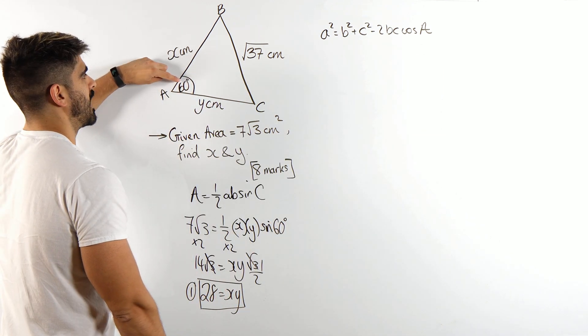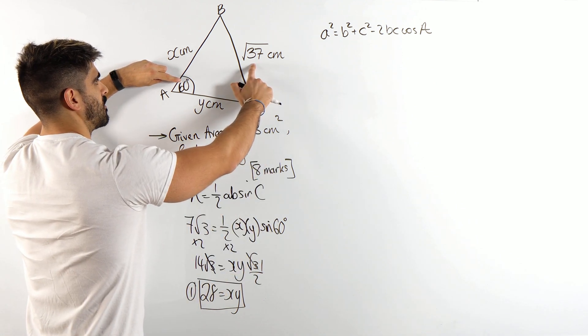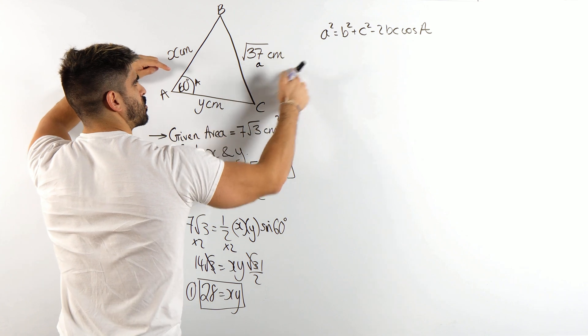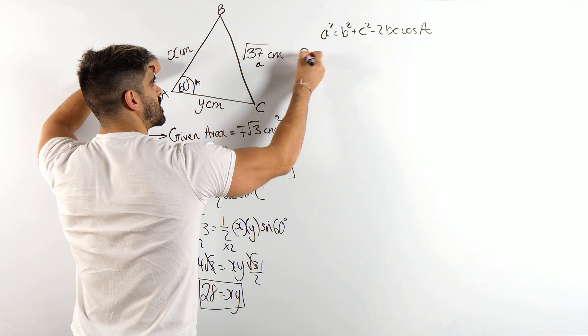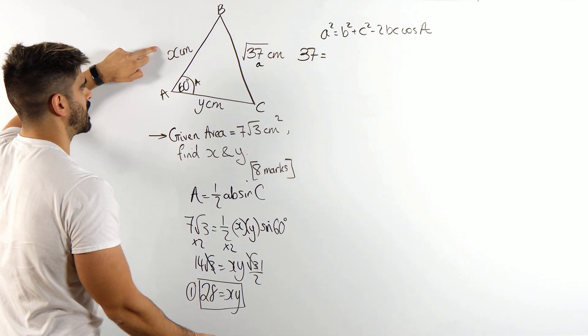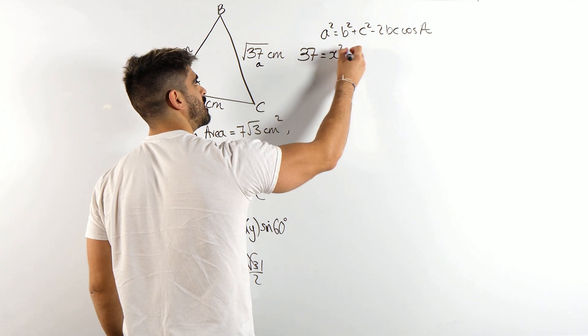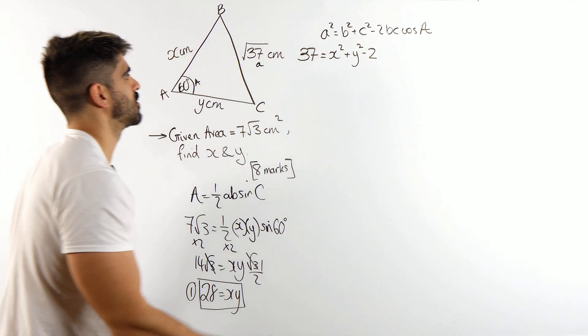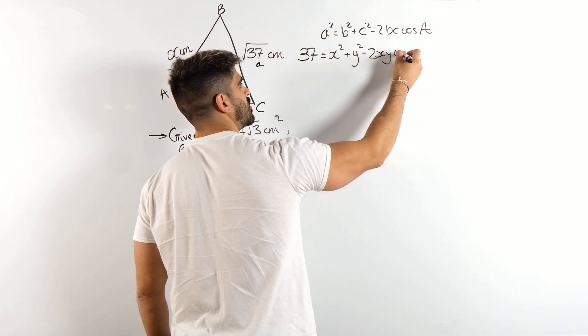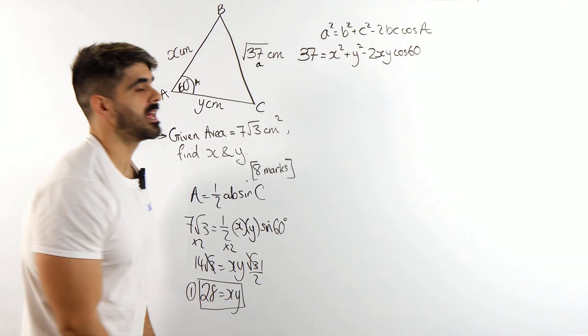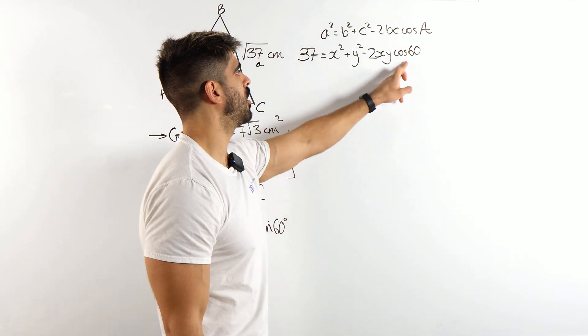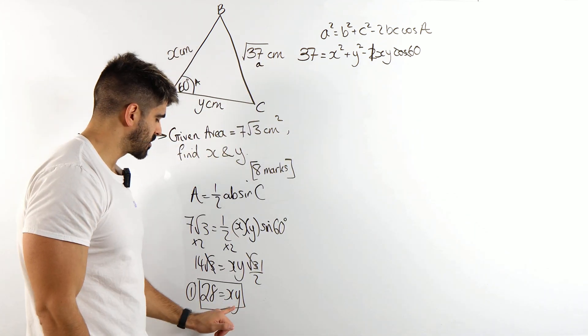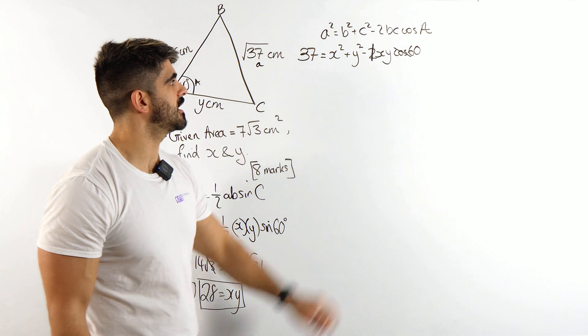When it comes to the cosine rule, you identify your angle and the lettering question is always opposite that. So that means that this is your angle a and this is your lower case a. When we take that and put it in here, we need to square it. Root of 37 squared is just 37, is b squared plus c squared, so that's x squared plus y squared minus 2bc cos a. Now, cos of 60 is 1 half, a half cancels the 2. What else do you notice? x y is 28.